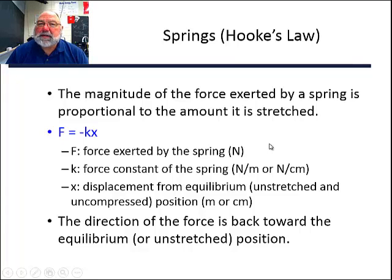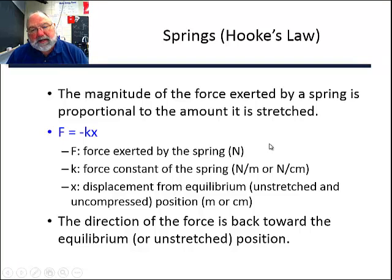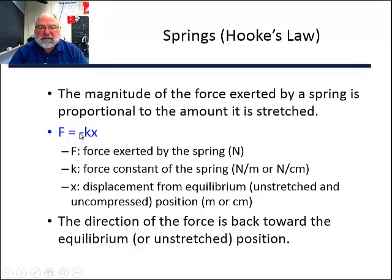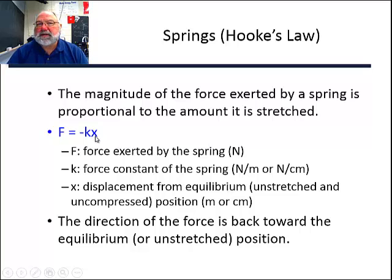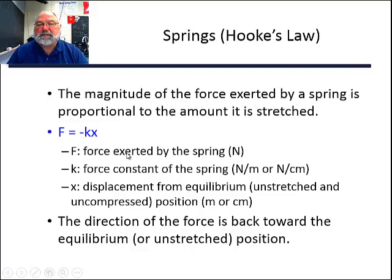So if you take a rubber band and stretch it a little bit, it pulls back a little bit. You stretch it more, it pulls back even more. You keep stretching it more and more, it pulls back harder and harder until it breaks. The way it's written mathematically: the force exerted by the spring equals negative — because this is a direction, meaning the force is pulling back instead of pushing — times some constant (how springy the spring is), times the amount of stretch from its equilibrium point. The x is how far it's stretched, and the negative sign just means the force is pulling back instead of aiding you in the stretch.